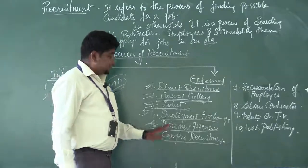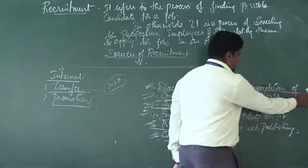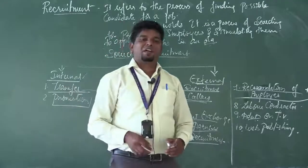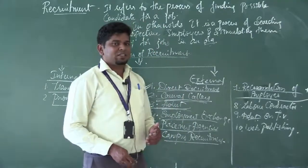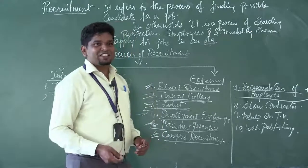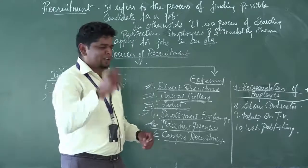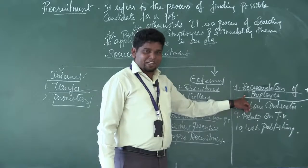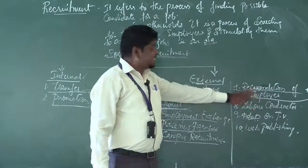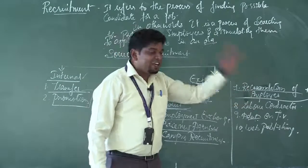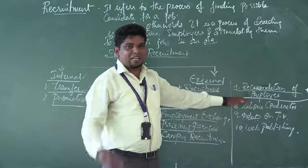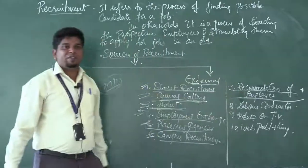The seventh source is recommendation of employees. If you are already an employee of a company and a post is vacant, you can recommend a family member or friend — your nephew, brother, sister — for that position. This is called recommendation of employees. Good candidates can be brought in through this method as well.